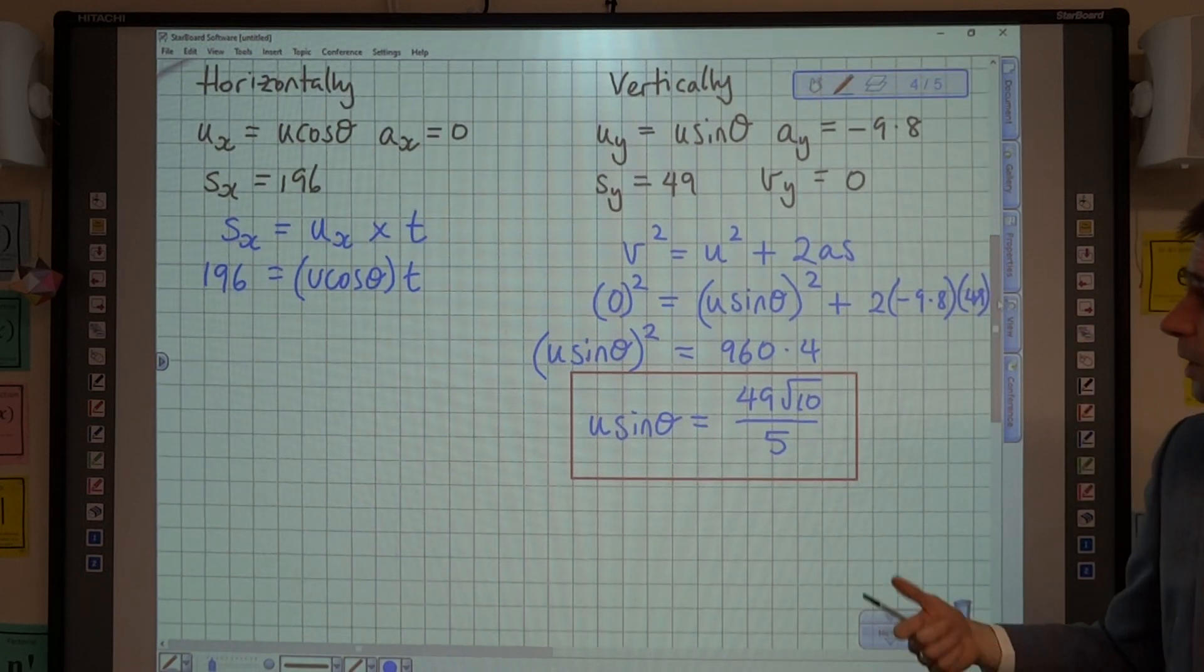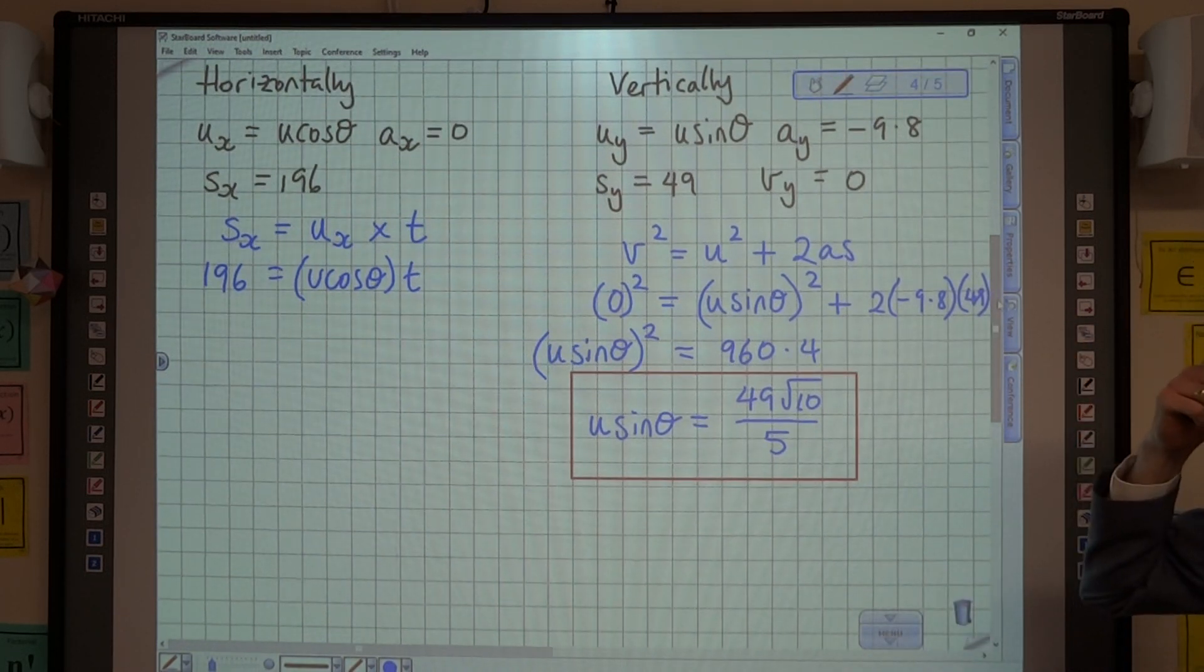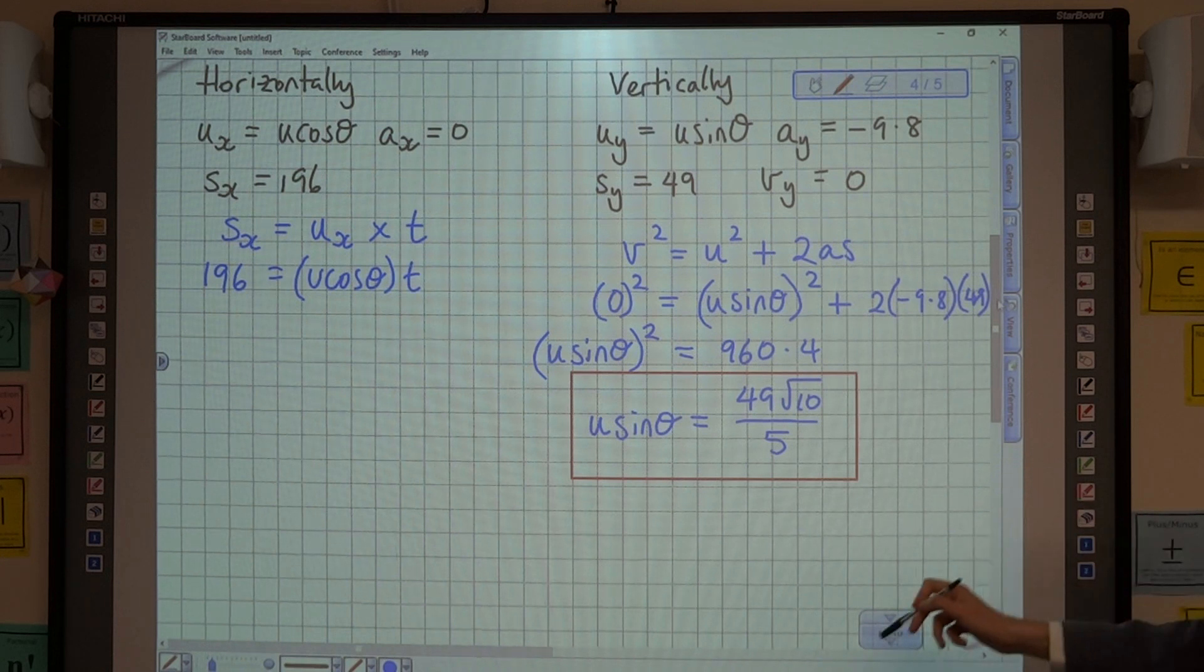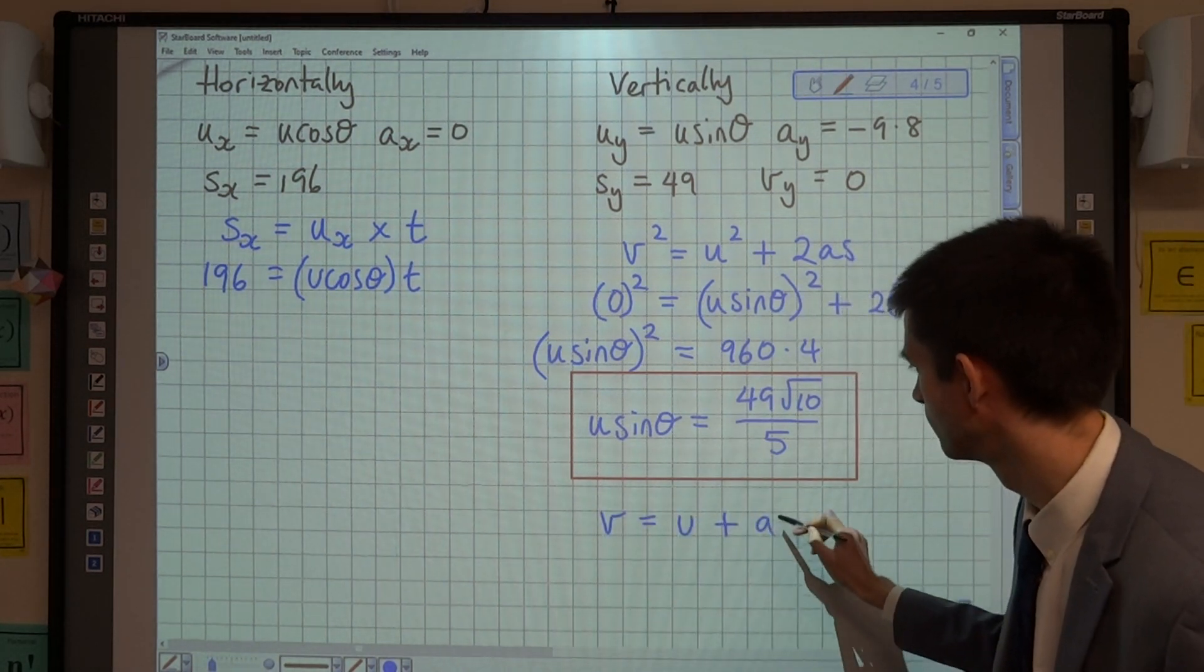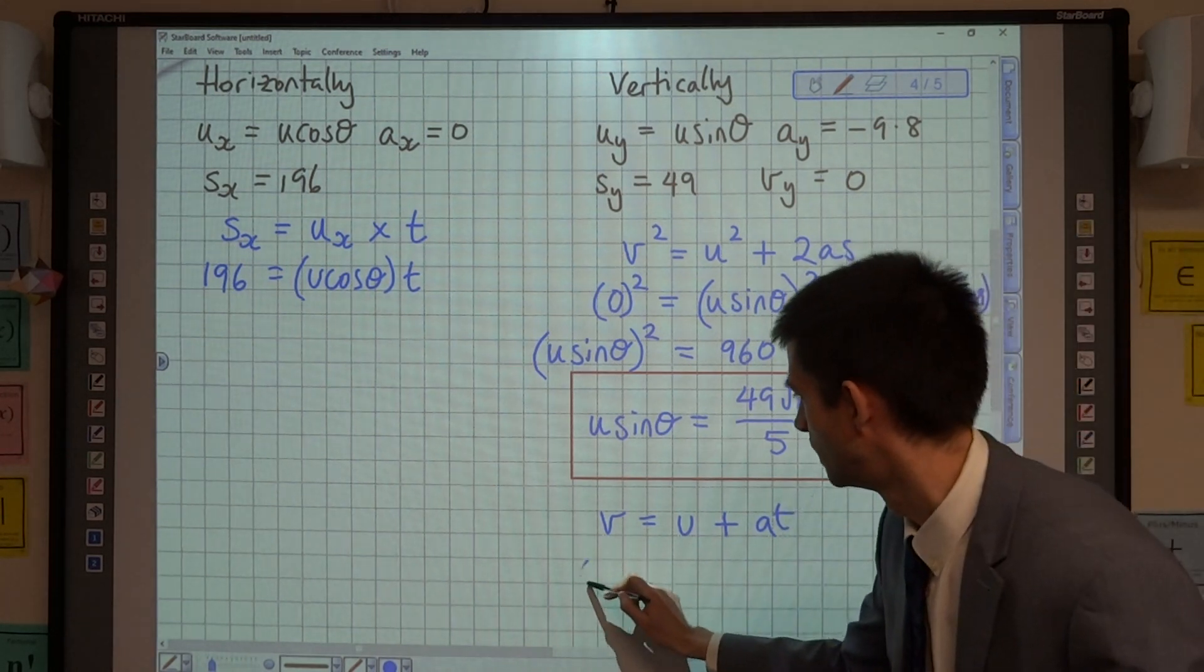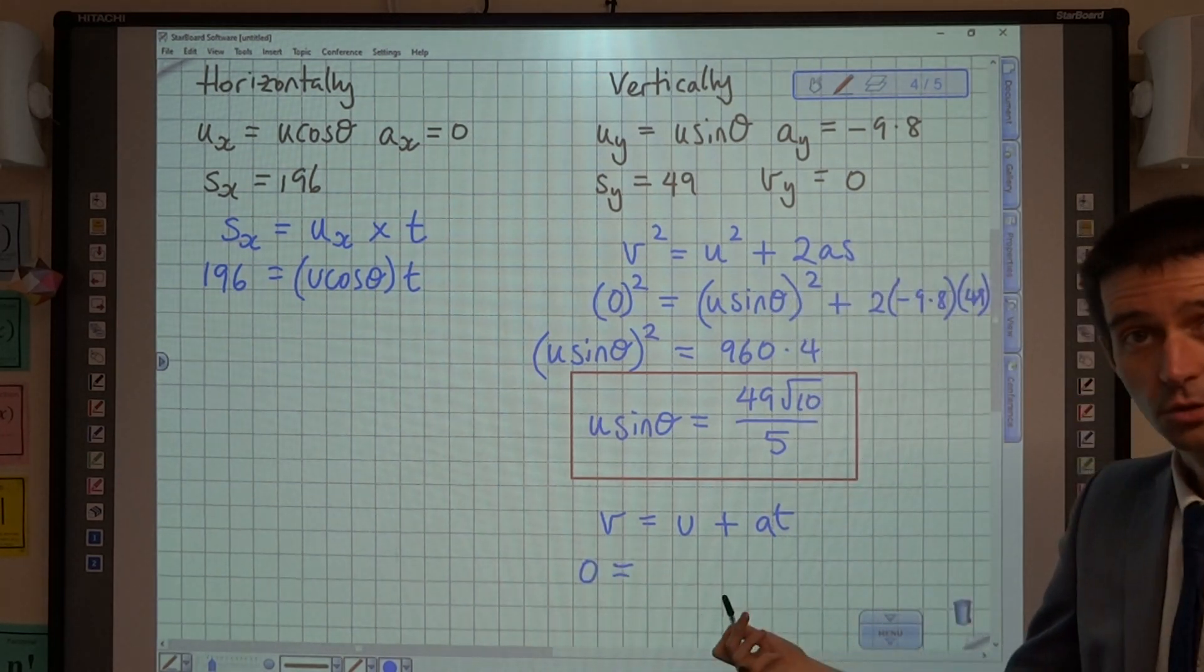Right, continuing to work vertically then, another Suvat equation we can use vertically is v equals u plus at. We know that the velocity is zero, because it's at its greatest height.